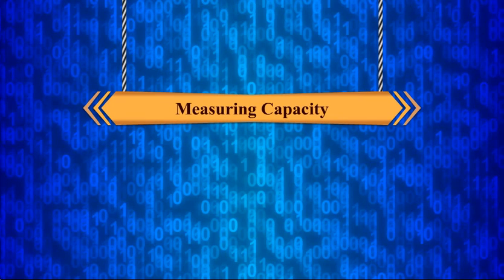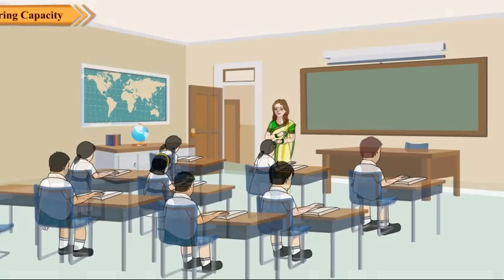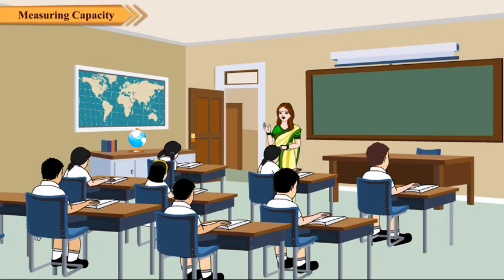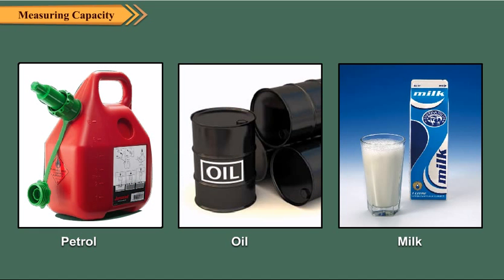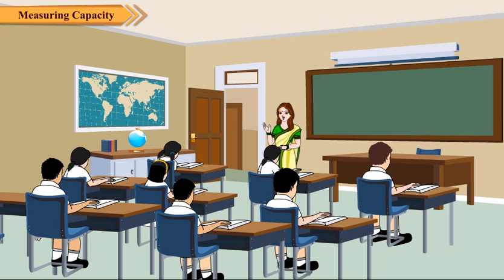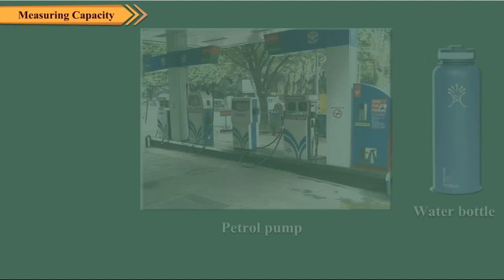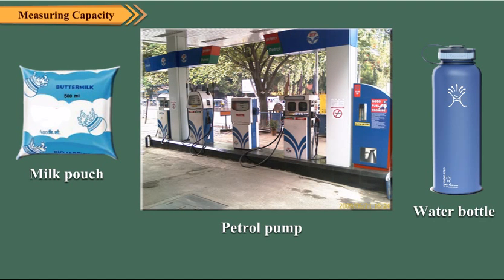Measuring Capacity. Children, in our everyday life, we measure the quantities of various liquids such as petrol, oil, milk, etc. Let us now discuss how we can measure the capacity of a container. The quantity of a liquid that a container or a vessel can hold is called its capacity. So the capacity of a container tells us how much of a liquid it can hold.